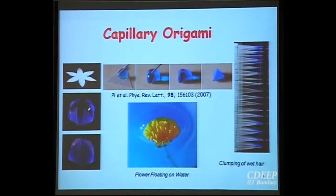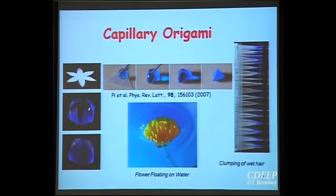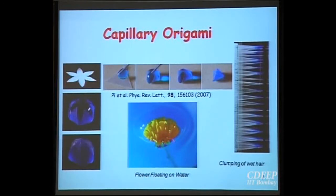Another interesting aspect is capillary origami. Capillary forces can lift material against gravity. For example, a flower made of the polymer PDMS — put water on it and allow the water to evaporate, and because of the capillary effect the polymer gets lifted and wraps around the water drop, giving a nice structure. Similarly, a triangle-shaped piece gives a pyramidal structure after the drop shrinks, so as the drop shrinks the petals get lifted.